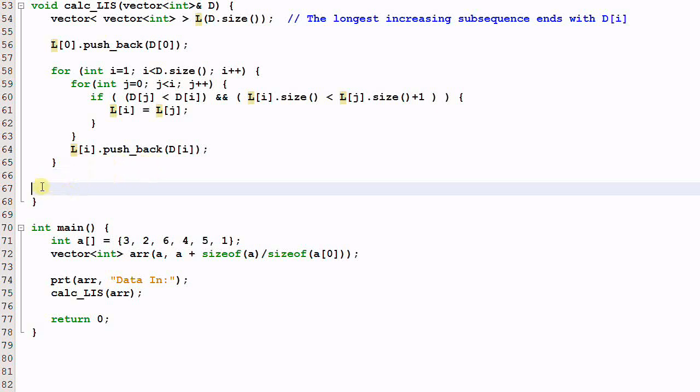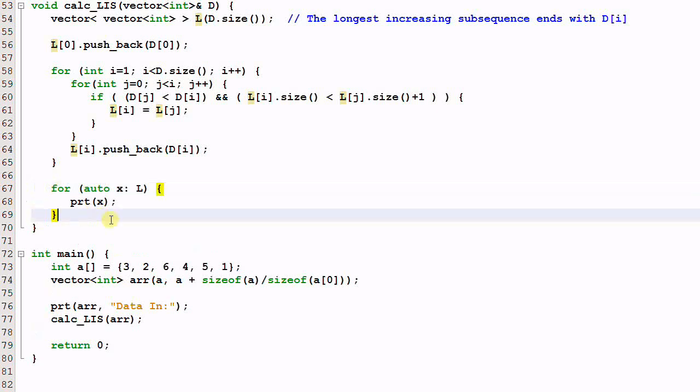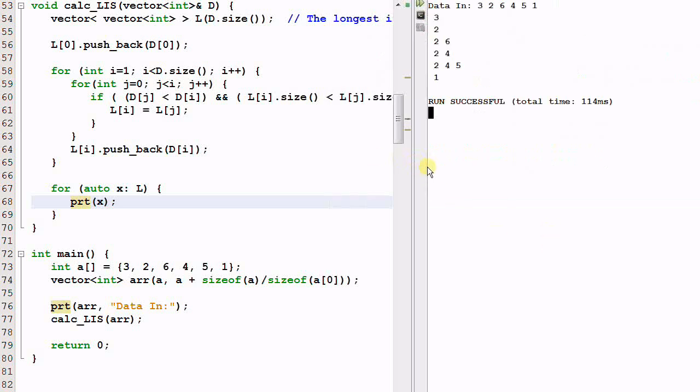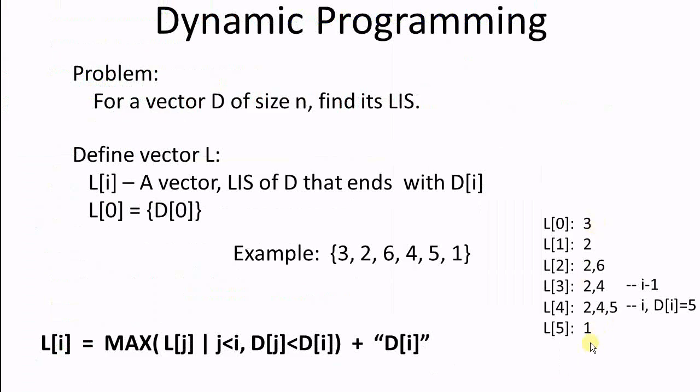To visualize the result, let's print out every entry of l. This is a print utile that I have to print a vector. Now we can run the program. So it prints out every entry of l. This is l0, l1, l2, l3, l4, l5. And l4 is the longest increasing subsequence. So this result is the same as the result that we have manually calculated.